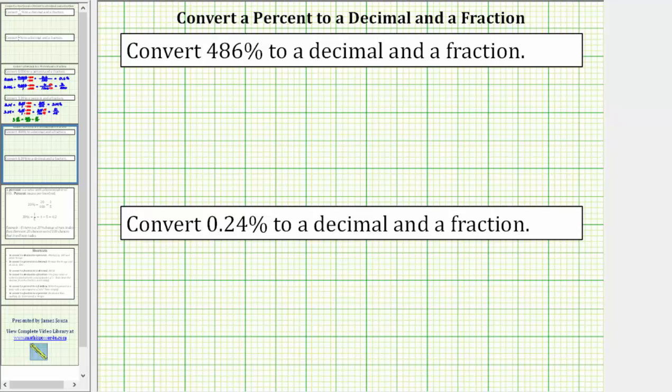Welcome to two examples on how to convert a percent to a decimal and a fraction. It's important to remember the word percent means per 100, and therefore percentage is always a number compared to 100.